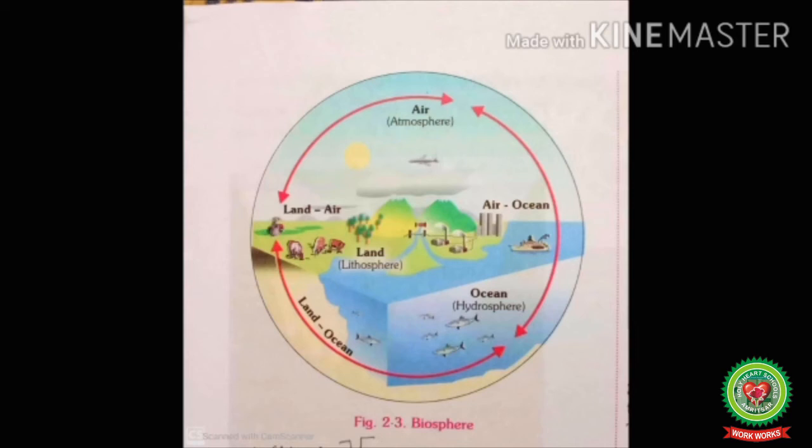All three domains together make up our biosphere. The biosphere is where our life's essential components — land, air, and water — are found. The biosphere is also called the life sphere. All three domains together form the biosphere, which is the part of the earth in which life exists.